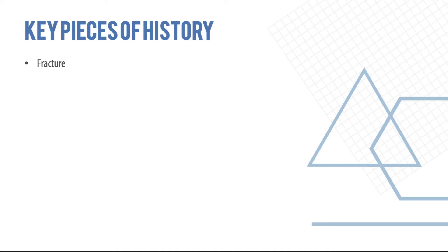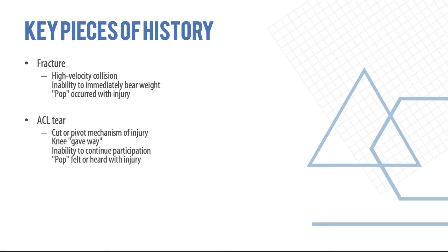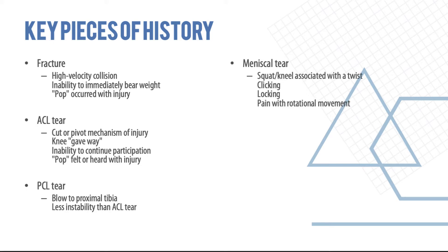Key pieces of history can help deduce whether it's a ligament injury, meniscal tear, or fracture. High velocity collision with inability to weight-bear suggests fractures. ACL tears usually have a history of pivot mechanism injury with the knee giving way and a pop heard at time of injury. PCL injury is usually secondary to a direct blow to the proximal tibia. Meniscal tear is associated with a squat or twist injury, with clicking, locking, and pain on rotational movement.